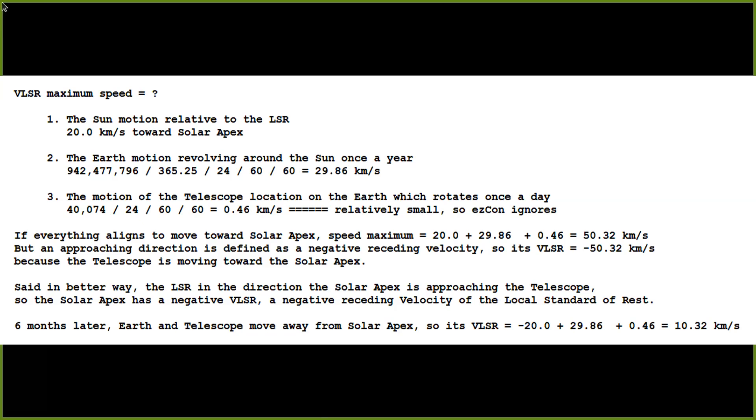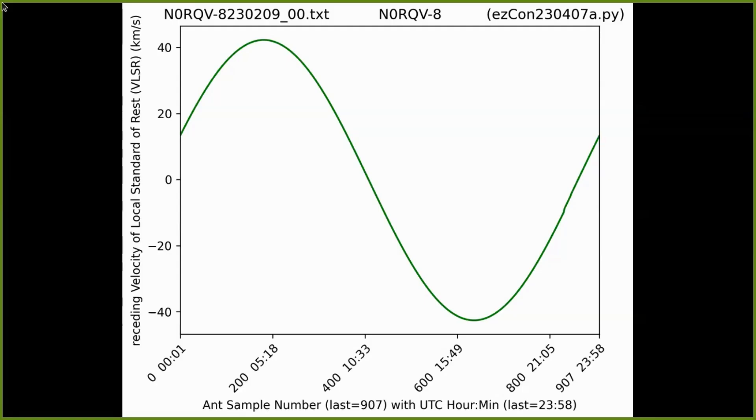So we have three motions and if all three motions happen to align to move towards the solar apex then the maximum speed would simply be the sum of those three numbers about 50 and a half kilometers per second. But remember approaching direction is defined as negative. So the VLSR would be minus 50.32 because the telescope is moving toward the solar apex. Maybe said in a better way, the local standard of reference in the direction of the solar apex would appear to be approaching the telescope. So the solar apex has a negative VLSR meaning a negative receding velocity of the local standard of rest. Six months later the Earth and the telescope are moving away from the solar apex and so its VLSR would be a different sum, some positives and some negatives, in this case 10.32.